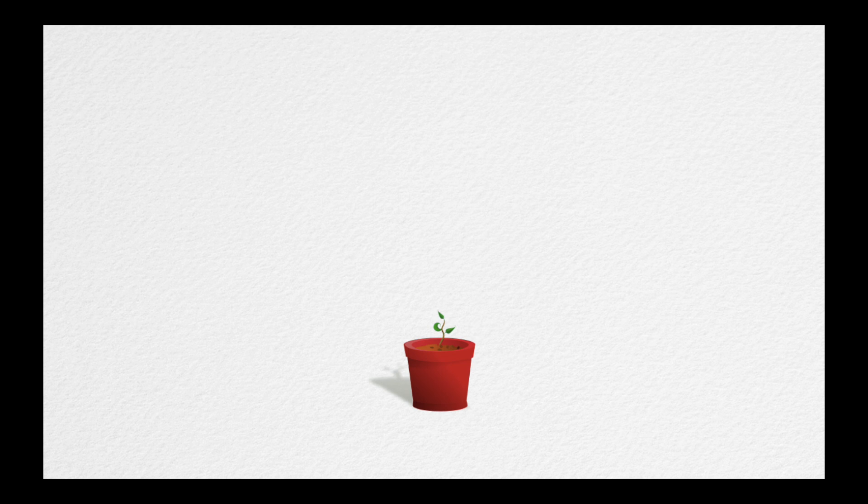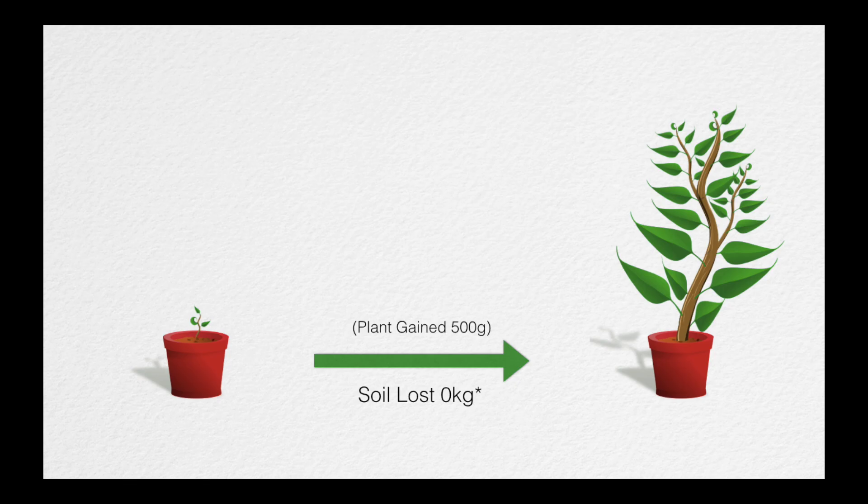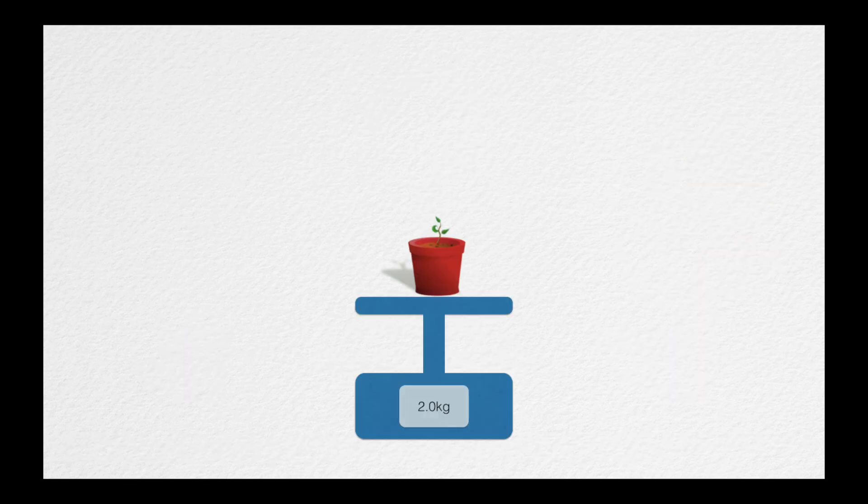If you've ever grown a seedling into a pot plant, you realize that the plant got larger and yet the amount of soil didn't get smaller. How could this be? It's not like the mass of the plant just appeared from thin air.